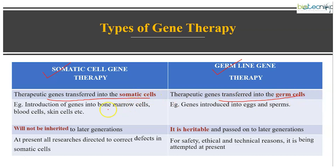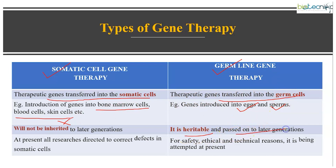Examples of somatic cells include bone marrow cells, blood cells, and skin cells. For germline gene therapy, the germ cells are eggs and sperms. Since somatic cell gene therapy targets somatic cells, it won't be inherited by later generations. Since germline gene therapy transfers therapeutic genes to gametic cells, those changes are heritable and passed on to later generations. At present, all research is directed at correcting defects in somatic cells; for safety, ethical, and technical reasons, germline gene therapy is not currently being attempted.